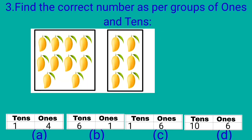Find the correct number as per groups of 1s and 10s. Kids, to find the correct number as per 1s and 10s group, we will count the things in the group at right side. 1, 2, 3, 4, 5, 6. At right side we have 6 mangoes that is 6 1s.